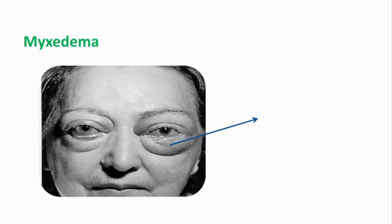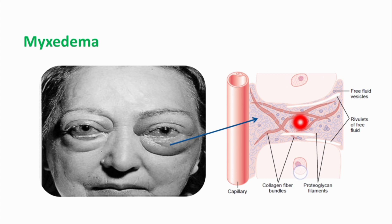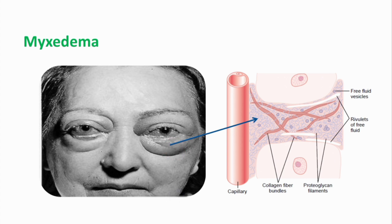Myxedema is a very special feature of hypothyroidism. It is basically a special type of edema usually seen on the face under the eyes. Increased quantities of hyaluronic acid and chondroitin sulfate bound with proteins form excessive tissue gel in the interstitial spaces. This increased quantity of tissue gel causes myxedema, and it is immobile — making it a non-pitting type of edema.